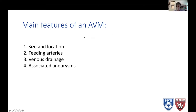When you see a patient with an AVM, you need to be able to describe some of the main features. That includes the size and the location of the AVM, what's feeding the AVM — meaning the feeding arteries — the venous drainage of the AVM, and finally, if there are any associated aneurysms.